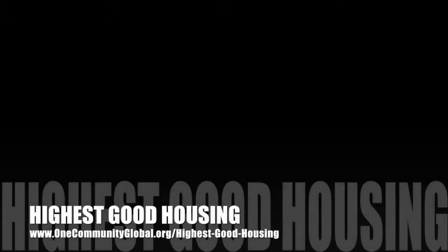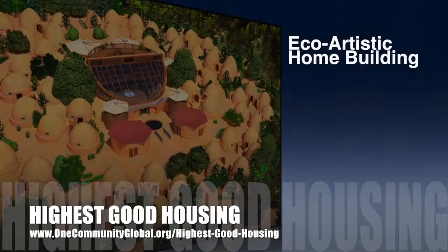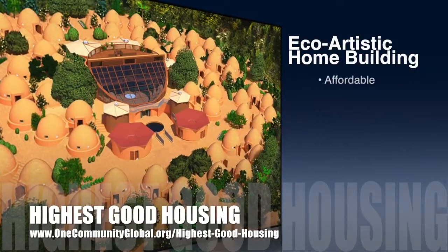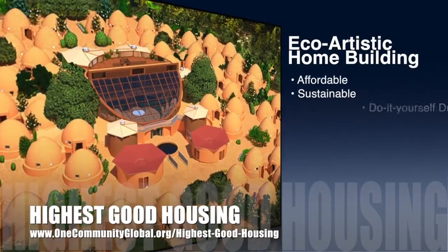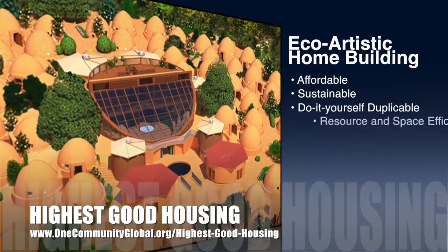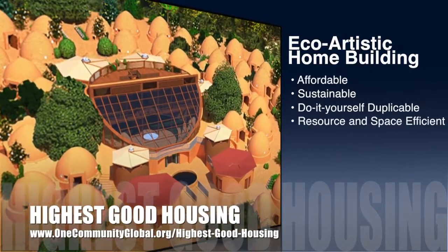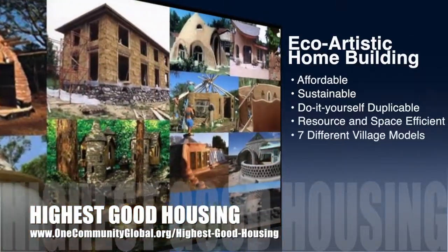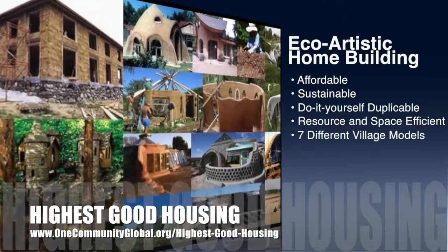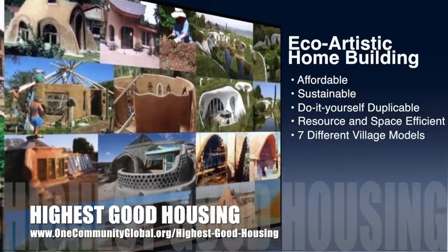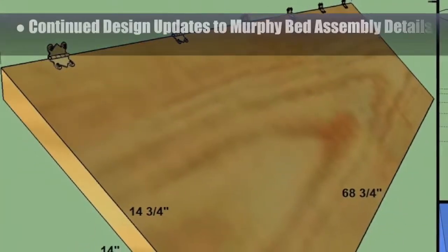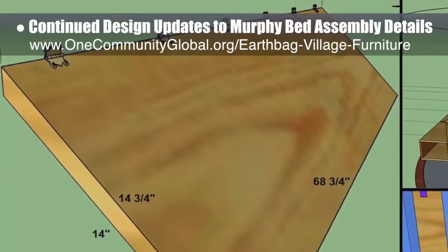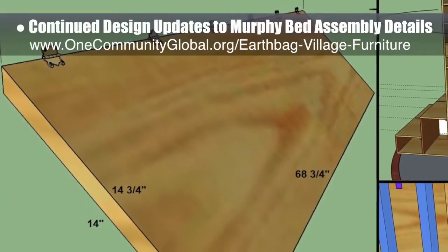One Community's approach to highest good housing is eco-artistic home building that is affordable, sustainable, do-it-yourself duplicable, resource and space efficient, and consists of seven different sustainably constructed village models. This week, the core team continued design updates to the open-source Murphy Bed furniture assembly details.